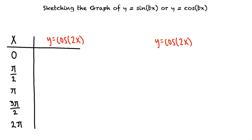pi, 3 pi halves, or 2 pi. If we solve these equations for x we will get x equal 0, pi fourths, pi halves, 3 pi fourths, and pi.